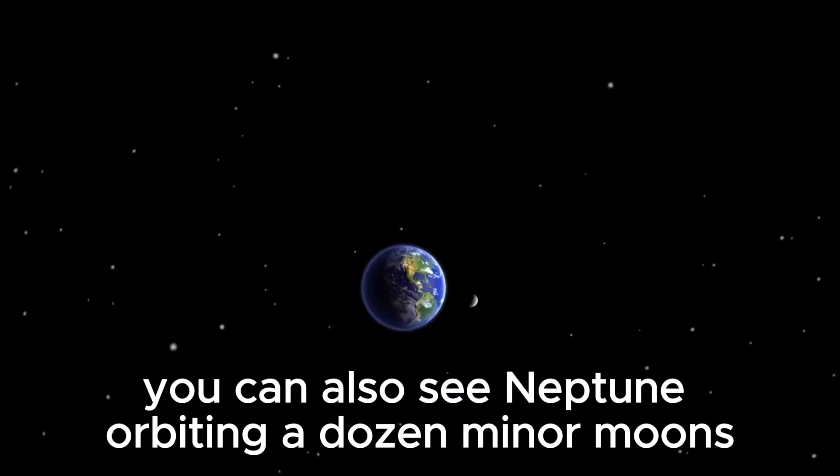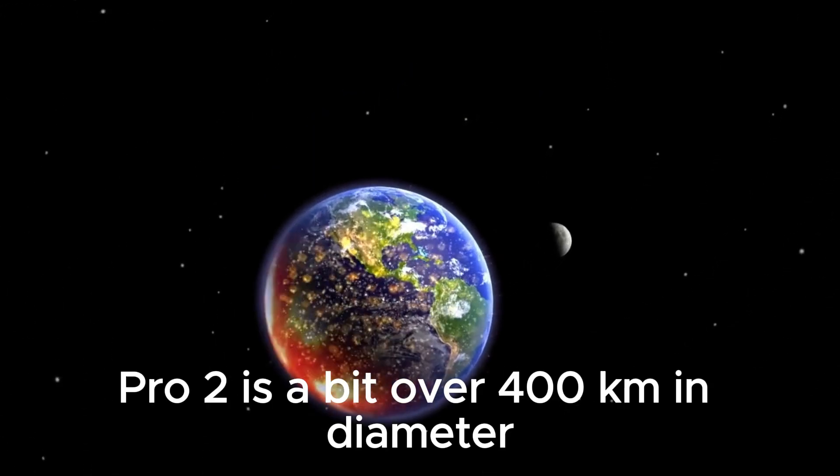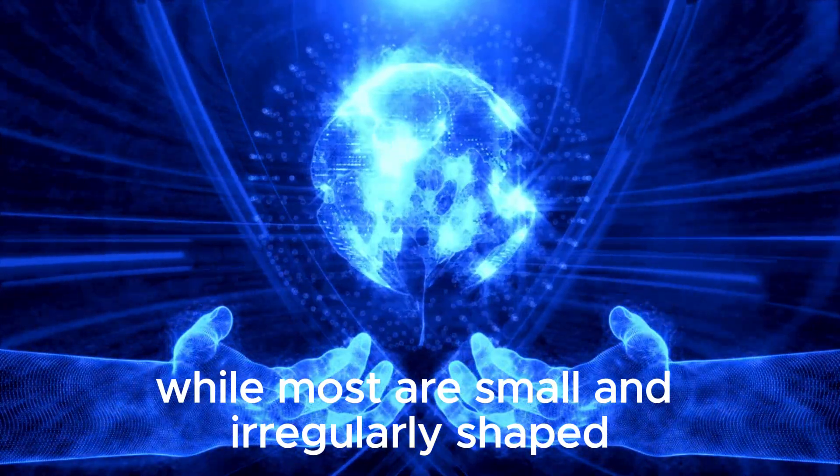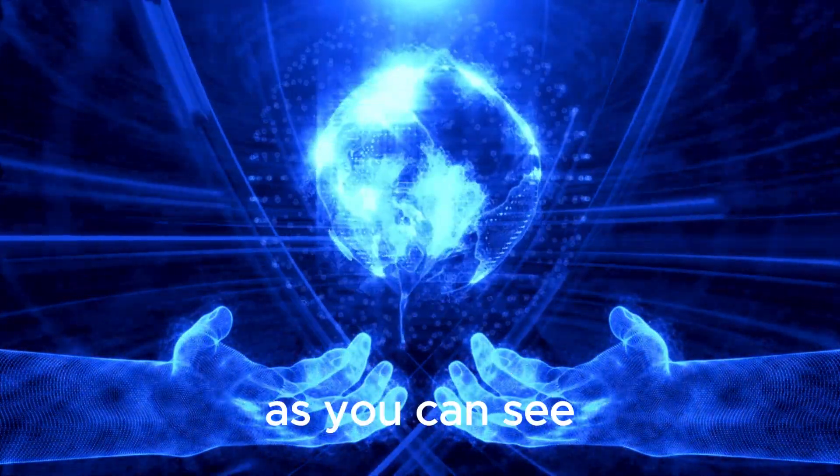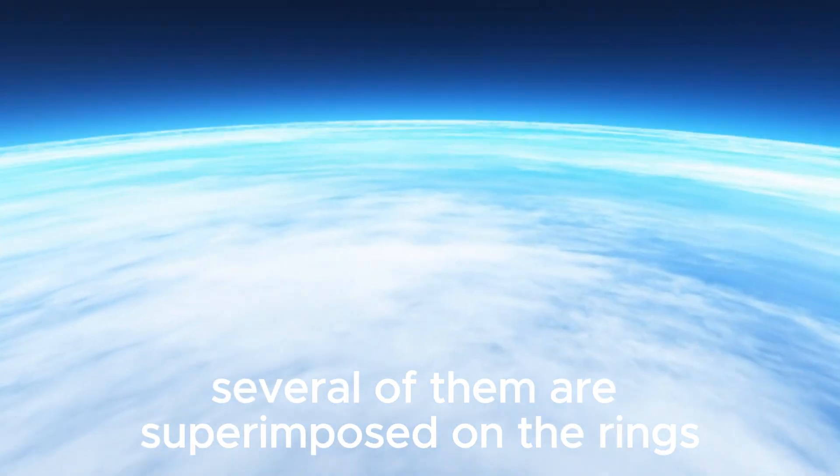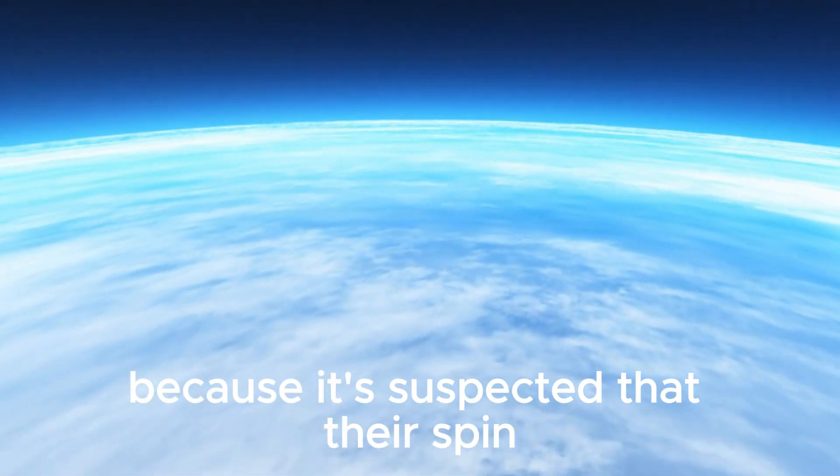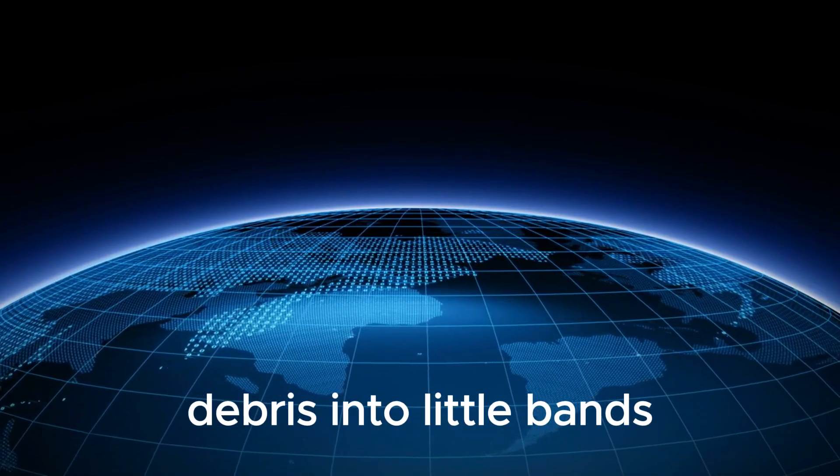You can also see Neptune orbiting a dozen minor moons. Protu is a bit over 400 kilometers in diameter, while most are small and irregularly shaped, measuring under 200 kilometers in width. As you can see, several of them are superimposed on the rings. These are called shepherd moons because it's suspected that their spin and gravity may assist in condensing the adjacent ring debris into little bands.